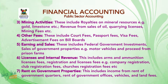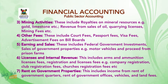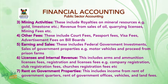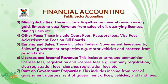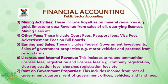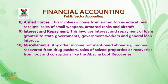Four, other fees — these include court fees, passport fees, visa fees, and advertisement fees on billboards. Five, earnings and sales — these include federal government investments, sales of government properties such as motor vehicles, and proceeds from prison farms. Six, licenses and internal revenue — this includes arms and ammunition license fees, registration fees, and company registration, club registration, and church registration fees.